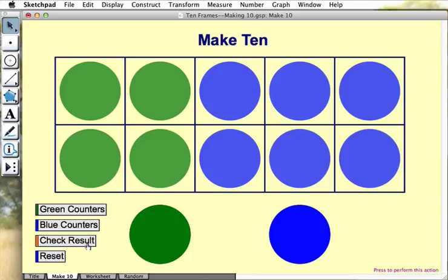Students can press the button Check Result to see the number of green and blue counters, and then to play again, they simply press Reset.